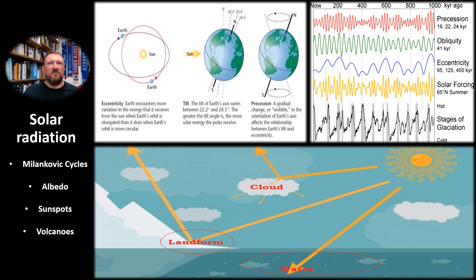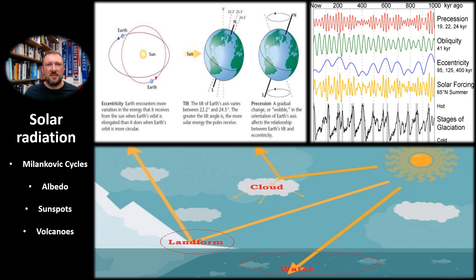Another set of influences on cyclical temperature variations are sunspots and volcanoes. All of these influences occur simultaneously in dynamic interactions — these are all happening at the same time — and they work to produce the natural cyclical variations in climate that we see in the geological and historical record.